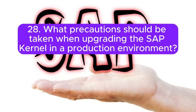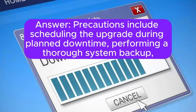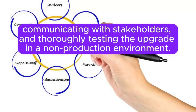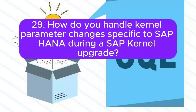28. What precautions should be taken when upgrading the SAP kernel in a production environment? Precautions include scheduling the upgrade during planned downtime, performing a thorough system backup, communicating with stakeholders, and thoroughly testing the upgrade in a non-production environment first.